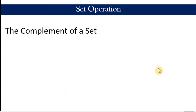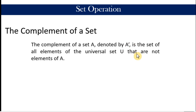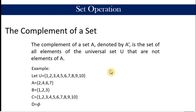The last operation is called the complement of a set. The complement of a given set, say A, is denoted by A prime, read as 'A prime.' The complement of a set is the set of all elements of the universal set that are not elements of A — that is, the complement contains the elements of the universal set that are not found in set A.